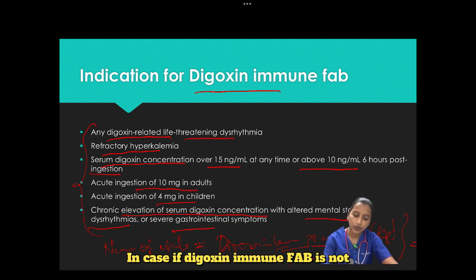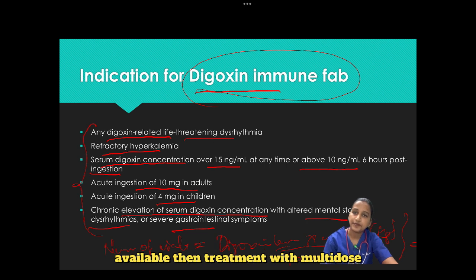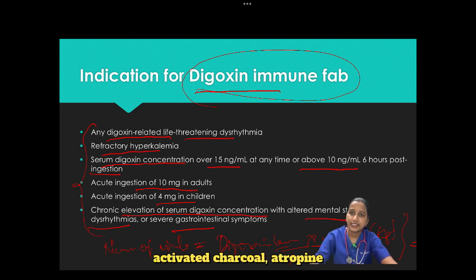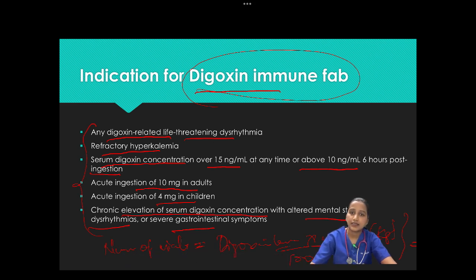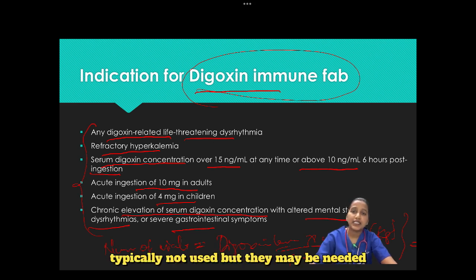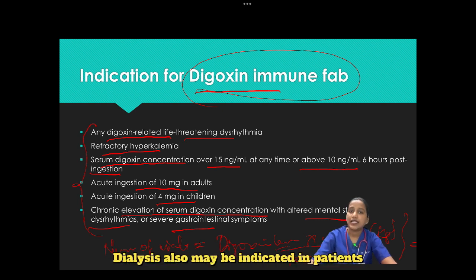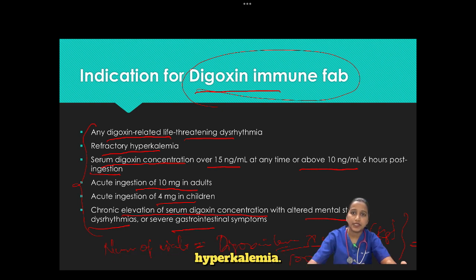If digoxin immune fab is not available, treatment with multi-dose activated charcoal, atropine, and antiarrhythmics like lignocaine and phenytoin must be considered. Cardioversion and pacing may induce dysrhythmias and are typically not used, but may be needed in patients without other therapeutic options. Dialysis may also be indicated in patients with acute renal failure and refractory hyperkalemia.